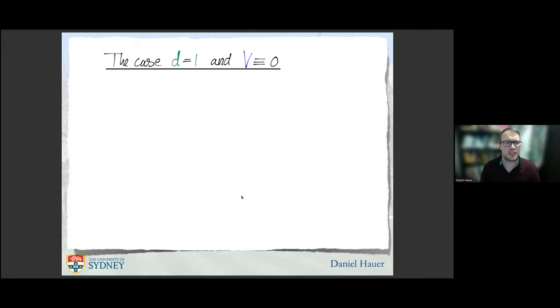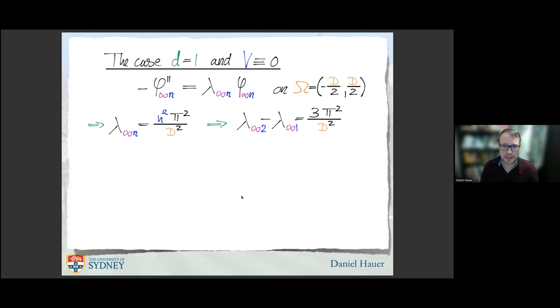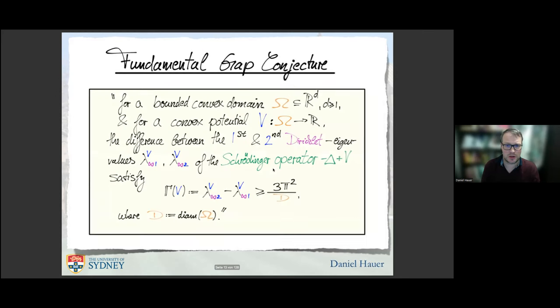When you look at dimension D equals one, and when you take the potential to be zero, then you have the classical one-dimensional eigenvalue equation or second-order ODE. We can compute the eigenfunctions and eigenvalues explicitly. We see then that the second minus the first eigenvalue is exactly 3π²/D². Provided that omega is the interval from -D/2 to D/2. You see that you get a sharp bound in higher dimension of the fundamental gap. It must be bounded from below by the fundamental gap of the zero potential in dimension one.